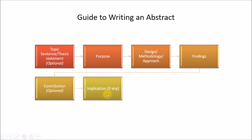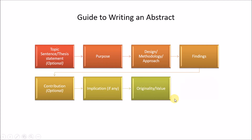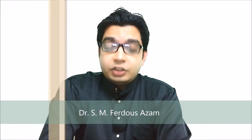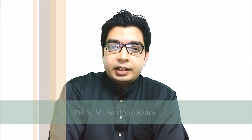The sixth component is implication — if applicable. If we don't have implications, we may have recommendations, but in most cases, if we have implications it's better to include them. The seventh is originality or value. The eighth and last point is limitation and further research, which is another optional point. So there are eight components or steps to consider in an abstract.